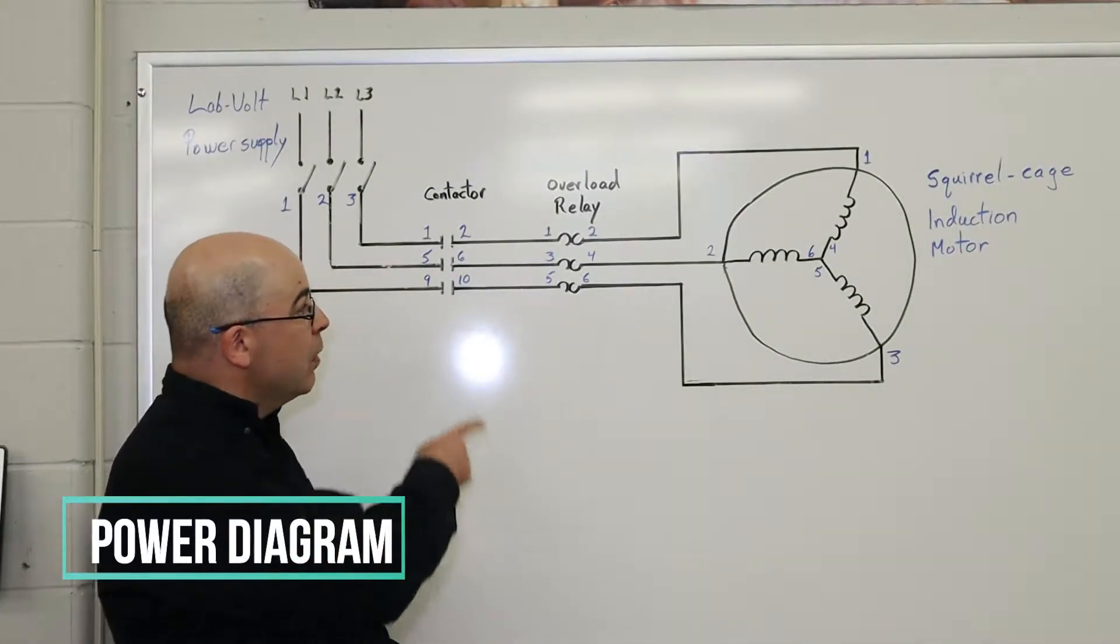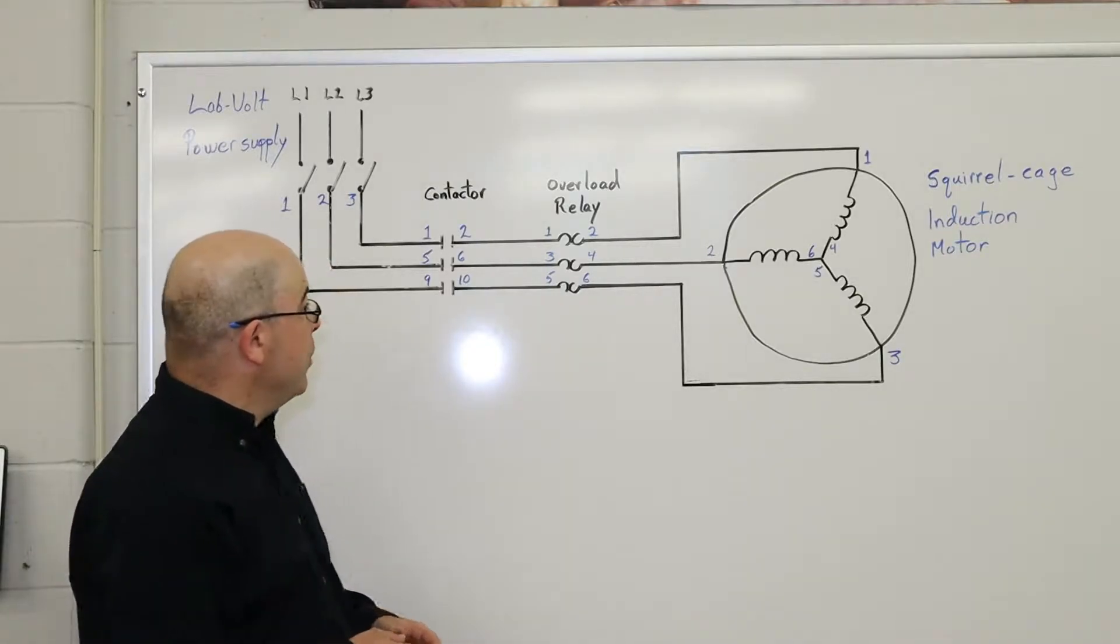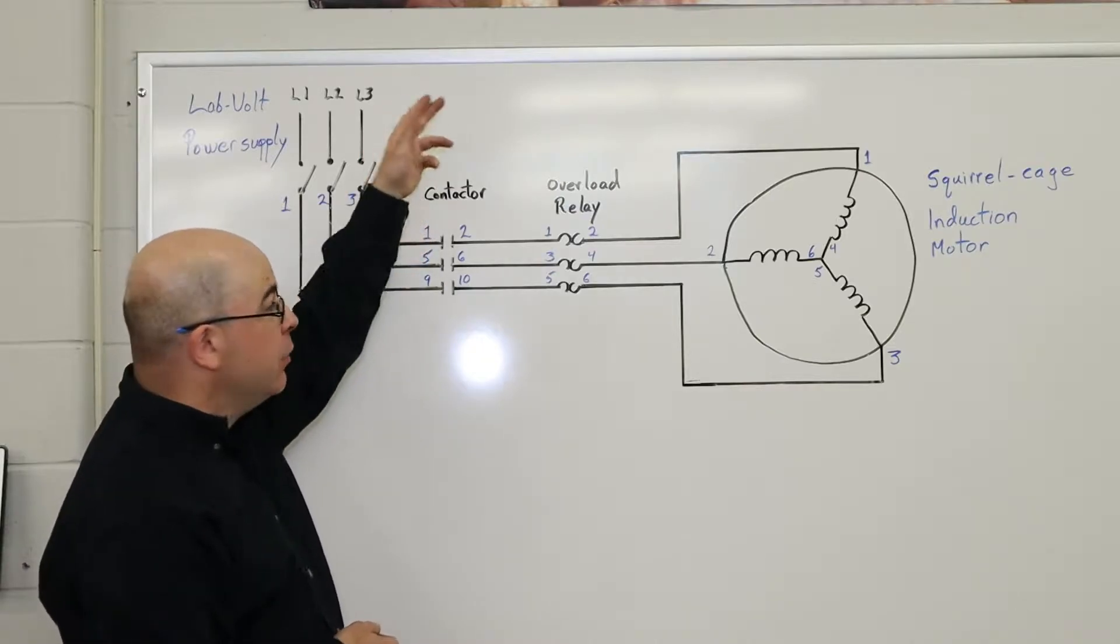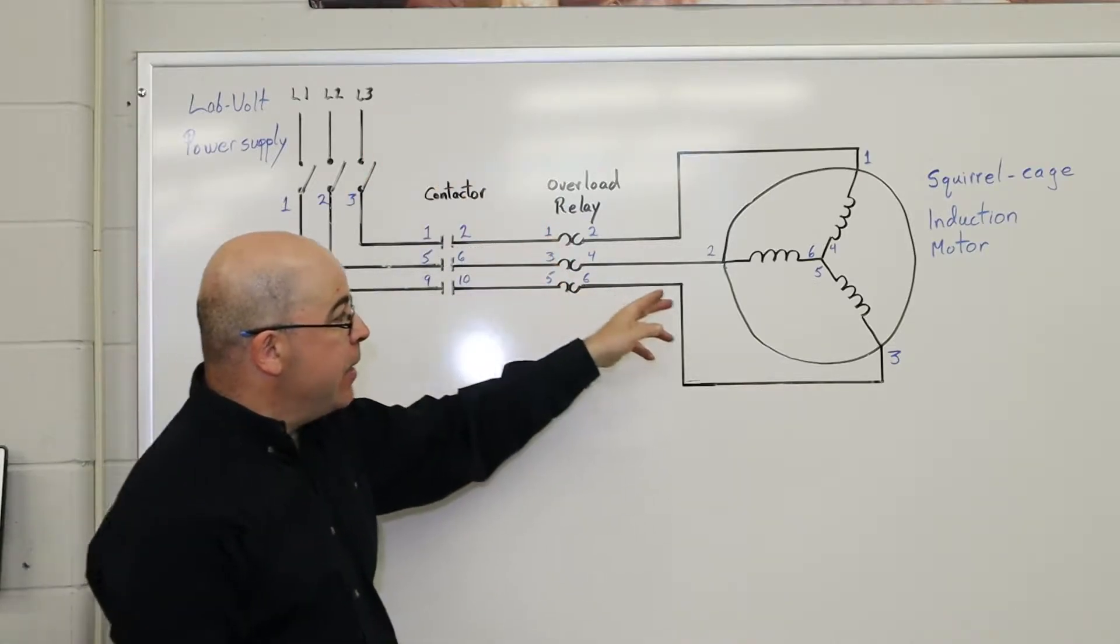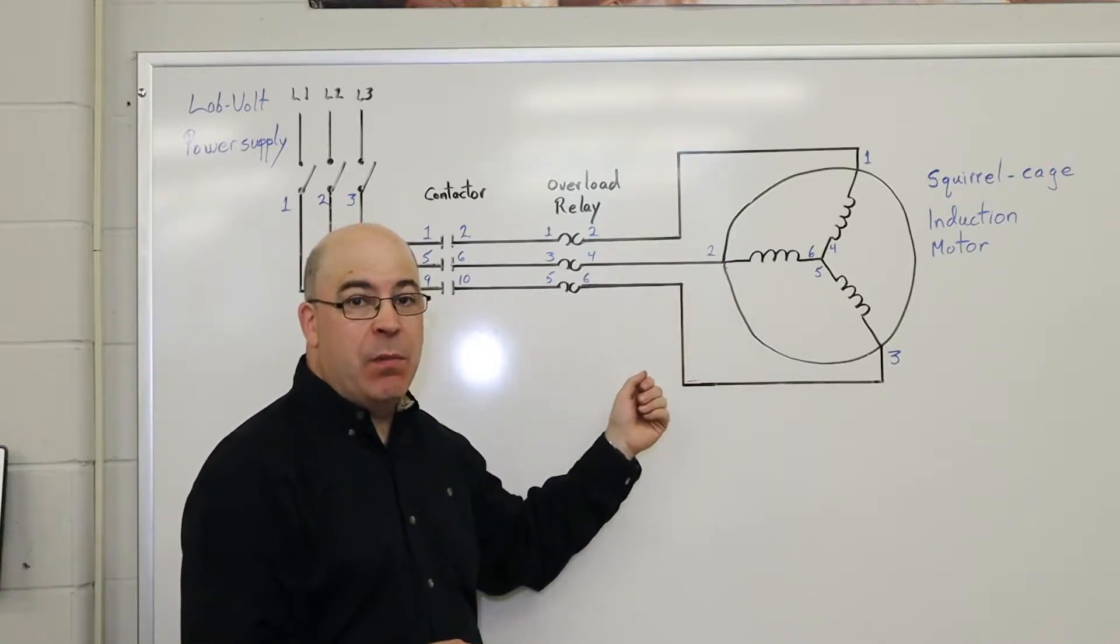We're going to go over this diagram which represents a typical situation where we've got a three-phase power supply, a contactor, overload relay, and finally our three-phase induction motor, which happens to be a squirrel cage motor.